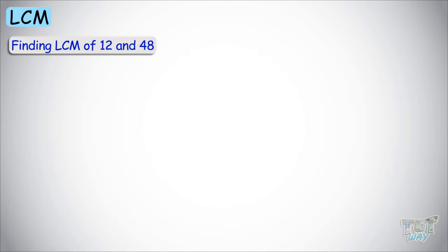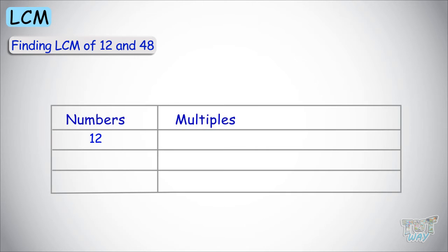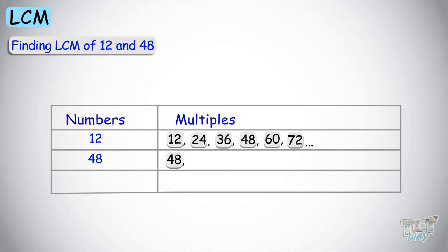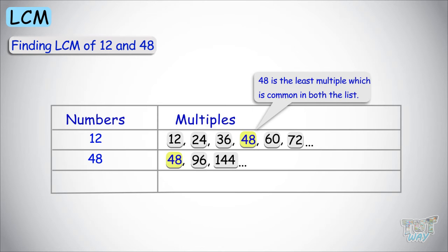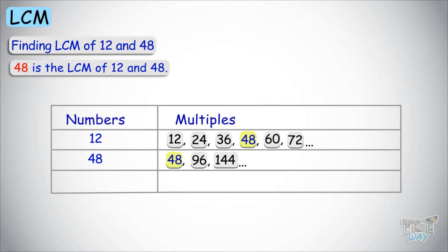Let's first learn the basic way. Write out the multiples of 12: 12, 24, 36, 48, 60, 72, and so on. Next, write out the multiples of 48: 48, 96, 144, and so on. Least common multiple means the first multiple that is common in both lists. We have 48 in the list for 12 and in the list for 48. So 48 is the least common multiple, which is common in both lists. So 48 is the LCM of 12 and 48.